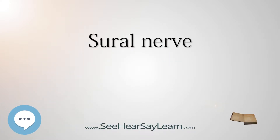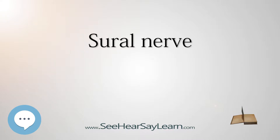The sural nerve is a sensory nerve in the calf region of the leg. It is made up of collateral branches of the tibial nerve and common fibular nerve. Two cutaneous branches, the medial and lateral, form the sural nerve.